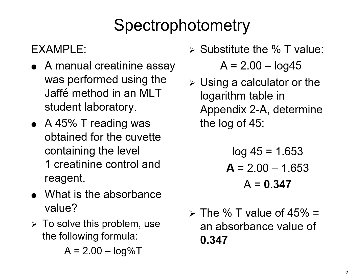Here we have an example where an MLT student was doing a manual creatinine assay using the Jaffe method. A 45 percent transmittance reading was obtained from the cuvette containing the level one creatinine control mixed with reagent. To find the absorbance value, we use the formula: absorbance equals 2.0 minus log of percent transmittance, so 2.0 minus log(45). Log of 45 is 1.653, and subtracting gives an absorbance of 0.347. This means a percent transmittance of 45 percent corresponds to an absorbance of 0.347.